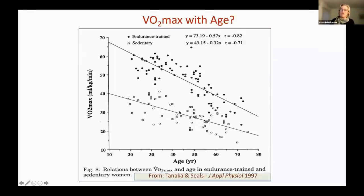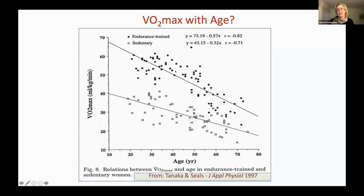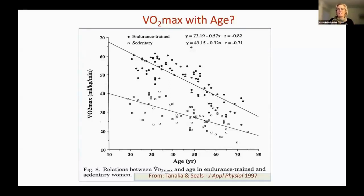You may also notice that the endurance-trained line drops a little bit faster than the sedentary line, so there's a convergence of those lines. What's happening is that older endurance-trained individuals are experiencing not only physiologic changes but also a fall in the ability to train as hard. Injuries last longer, you need more recovery time, and training volume and intensity go down — so there's some detraining added on top of the physiologic changes.